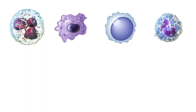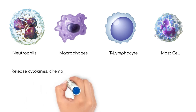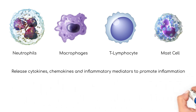The chronic inflammation is caused by the infiltration of immune cells, such as neutrophils, macrophages, T-lymphocytes, and mast cells into the lung tissue. These cells release cytokines, chemokines, and other inflammatory mediators, which promote the inflammatory response.